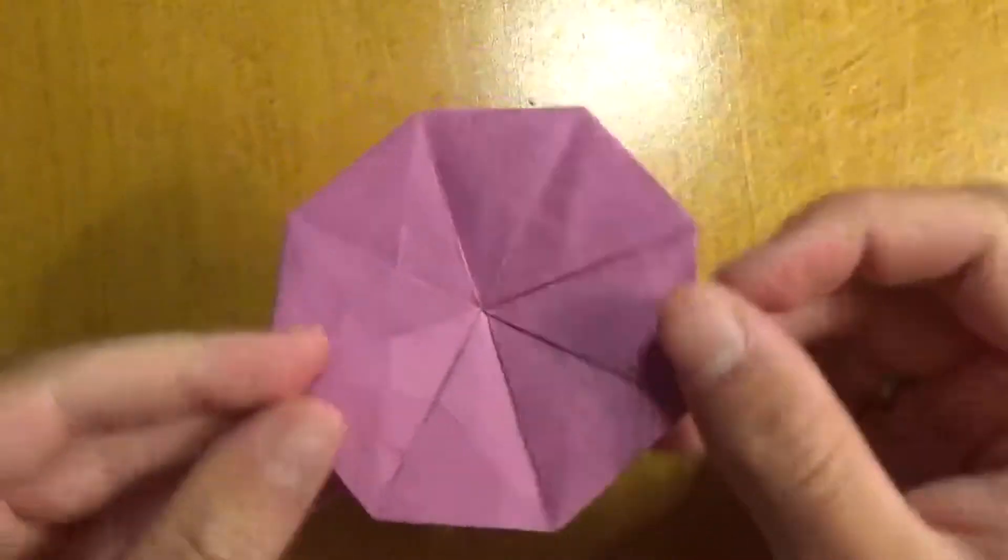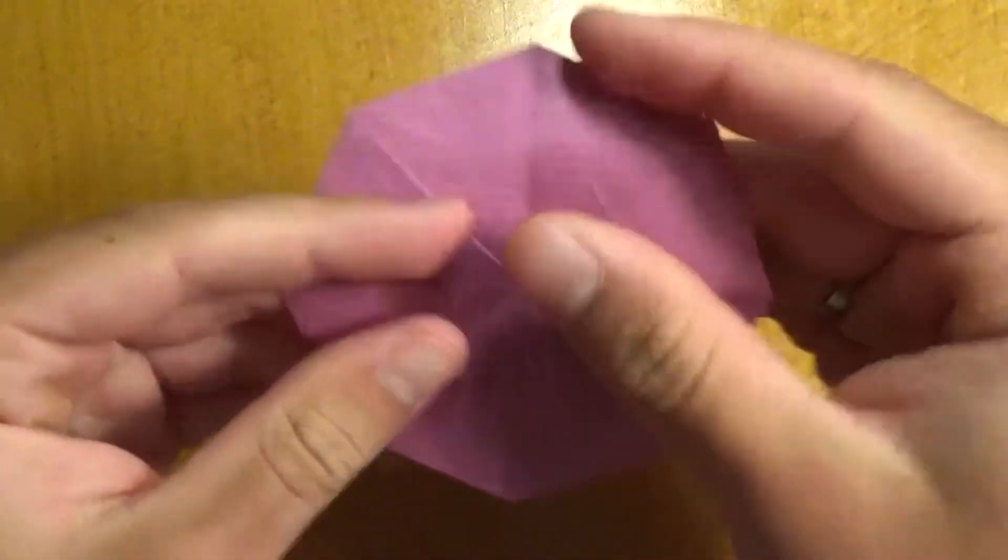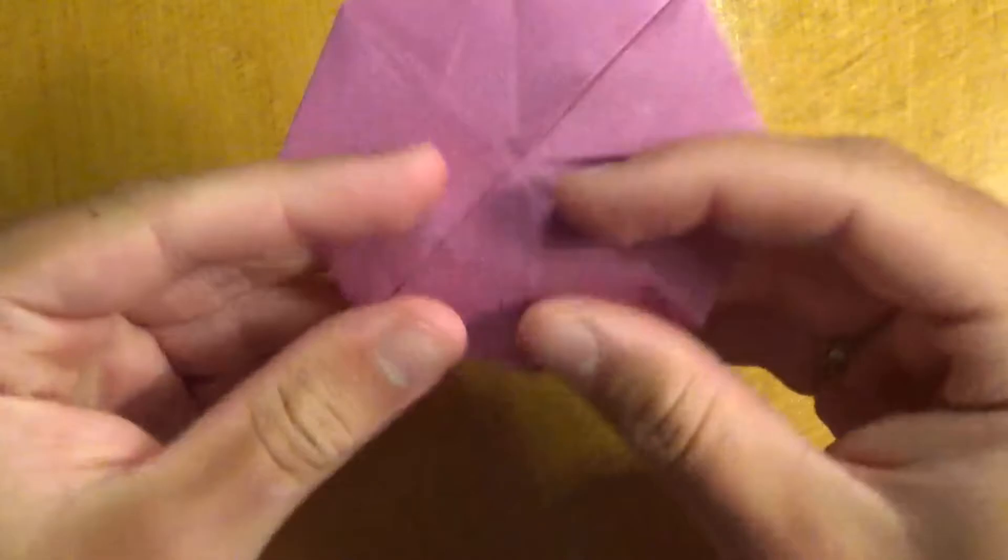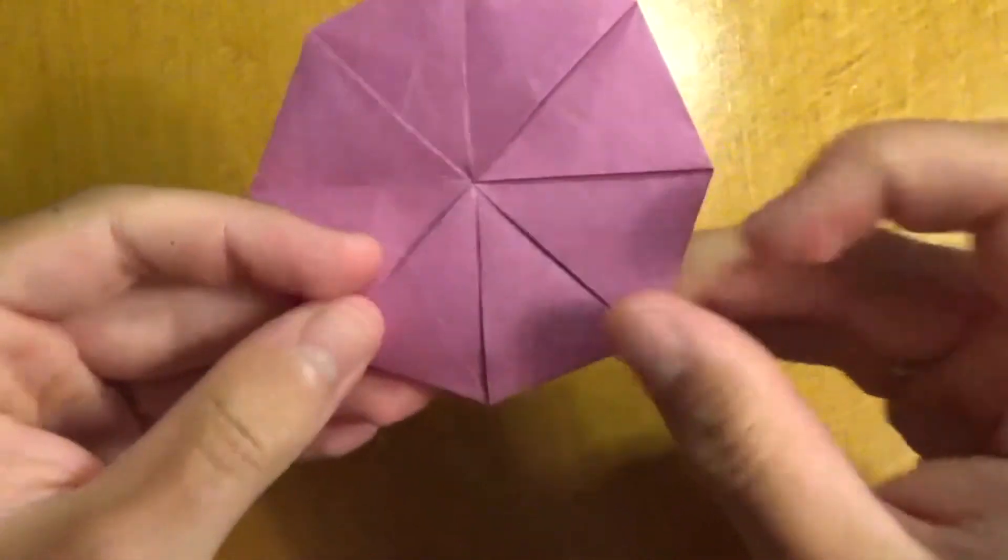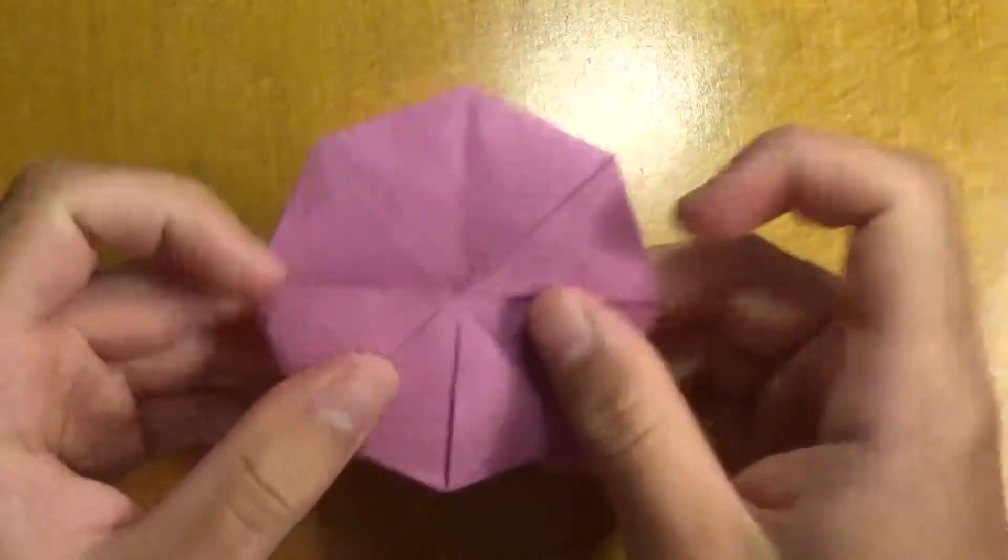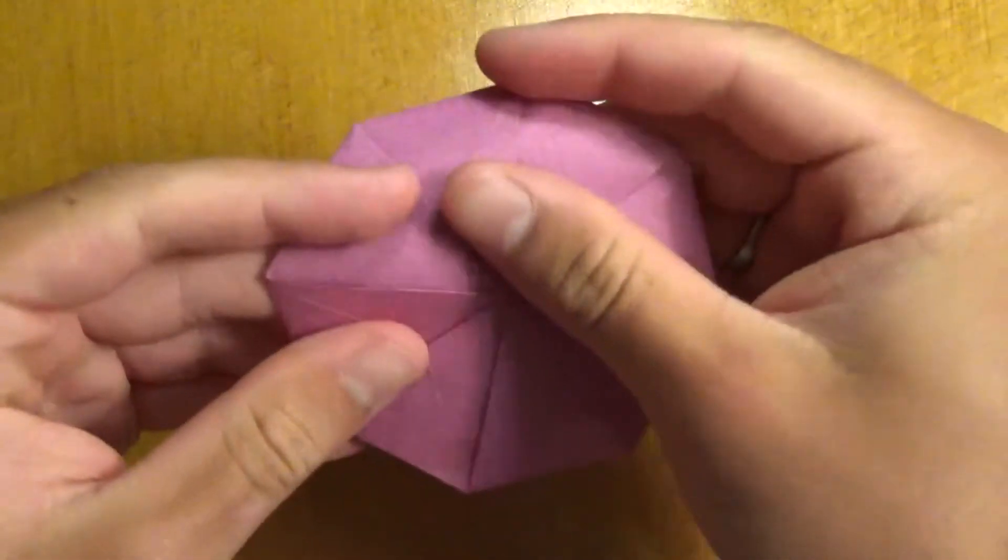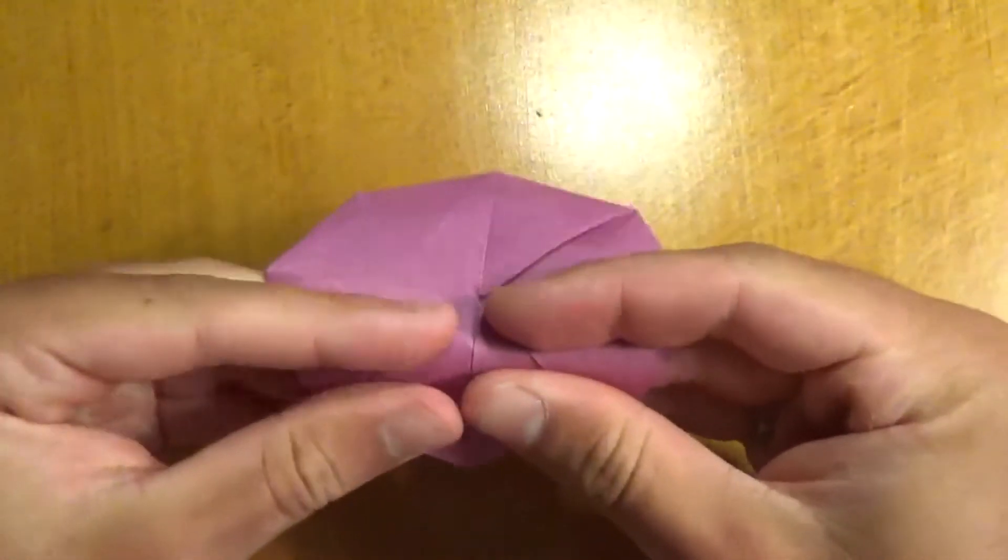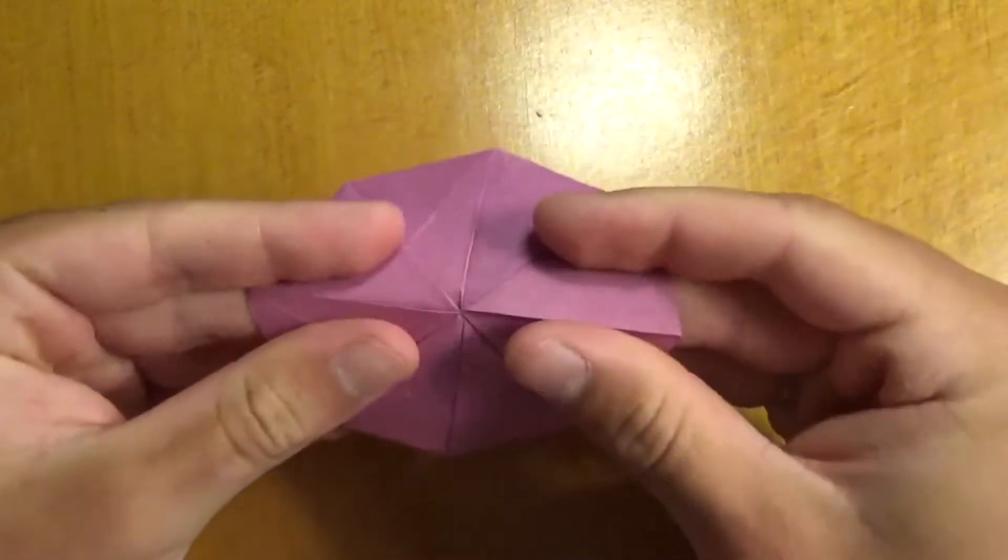And now here's our flicker. And to make it fly a little bit better, let's just give it a little bit of curvature like this. Or if you want it even more curved, you can use the edge of a table. But I'm just going to curve it like this. Because I've got to get this video done. Like that.